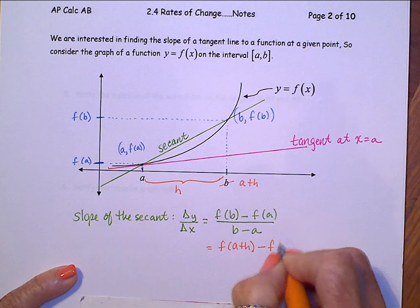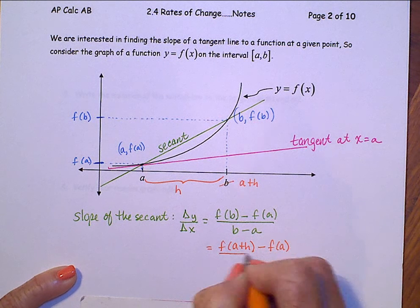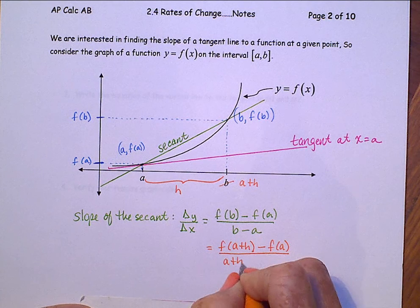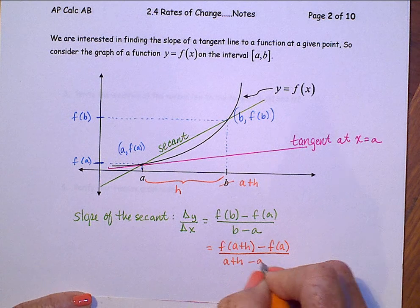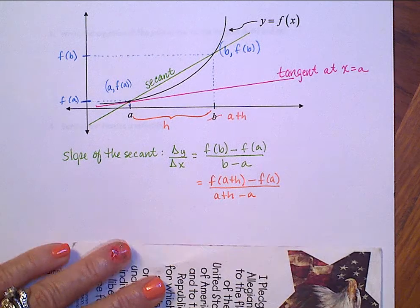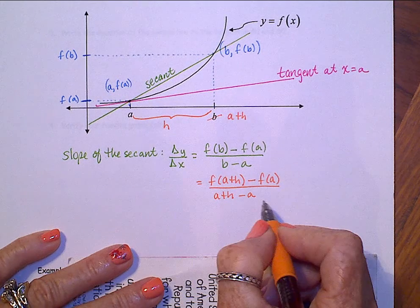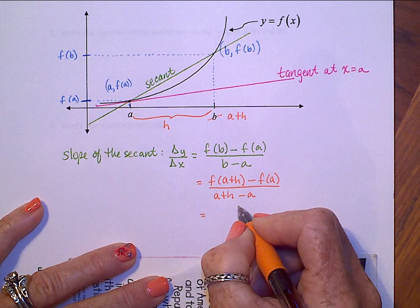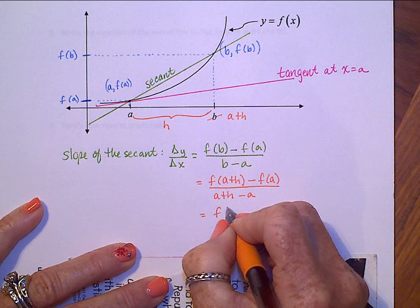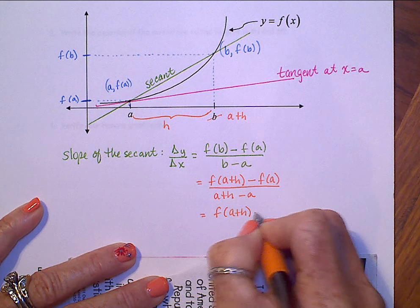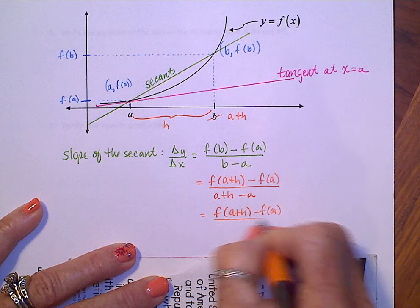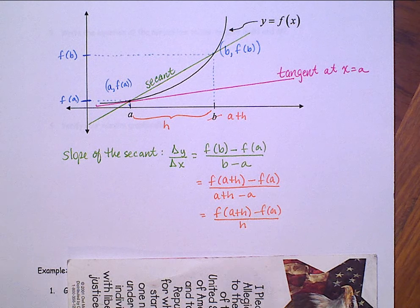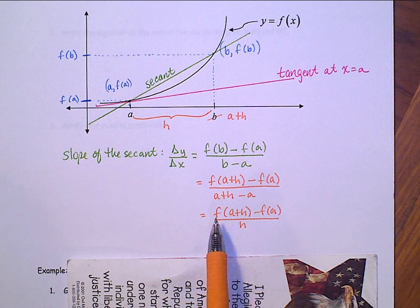And coming down here, then, and making that substitution into this equation, f of b, well b we're now calling a plus h. So this is f of a plus h, minus f of a, all over b, which is a plus h, minus a. And we see this denominator simplify down to be f of a plus h, minus f of a, all over h. So there's the slope of the secant line.